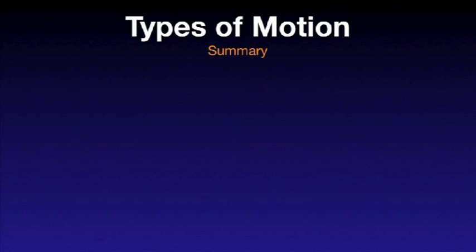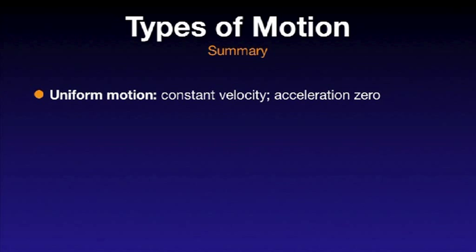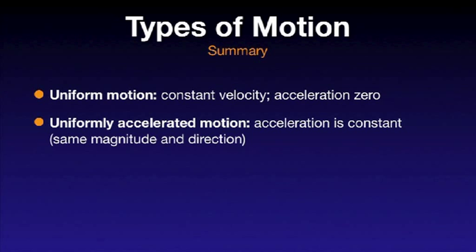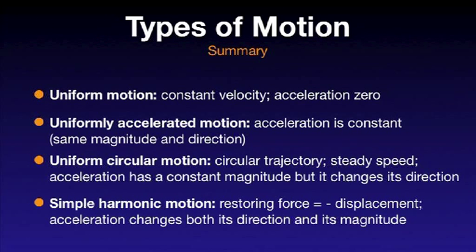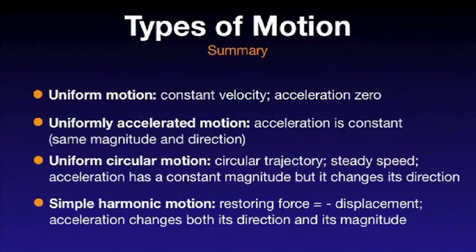Let's recap the main points of today's podcast. Uniform motion is a motion at a steady speed in a straight line — the acceleration is zero. Uniformly accelerated motion is one in which the acceleration is not zero but constant throughout the motion. Uniform circular motion is one in which a moving body moves in a circle at a steady speed — this is a type of accelerated motion. Simple harmonic motion is motion in which the restoring force is proportional to the displacement and has a direction opposite to that of the displacement, implying that the acceleration vector changes both its direction and its magnitude.